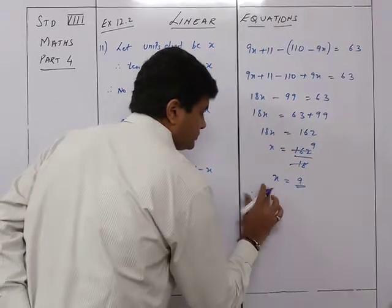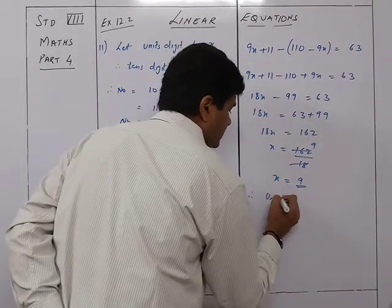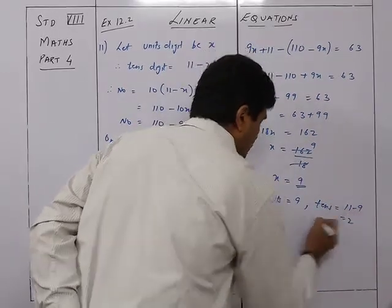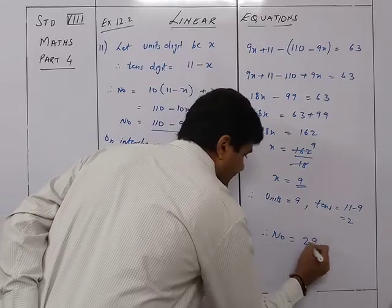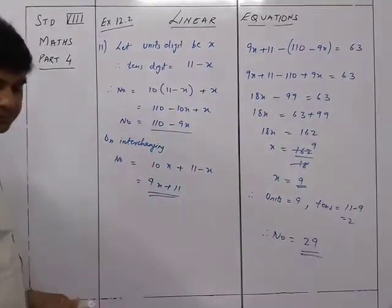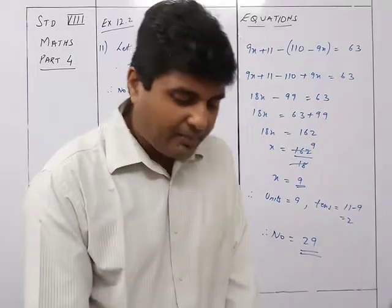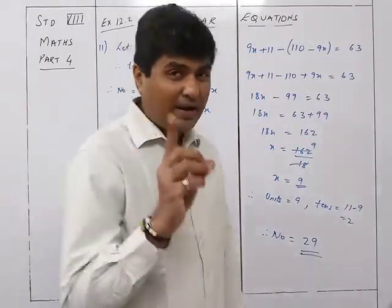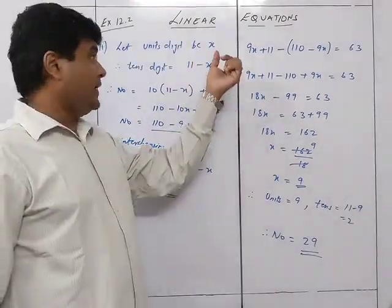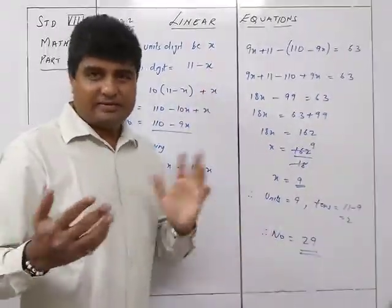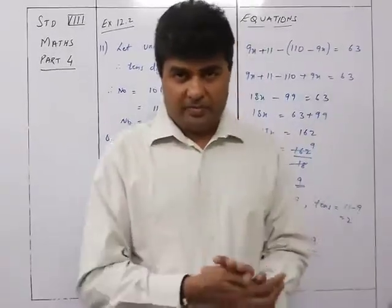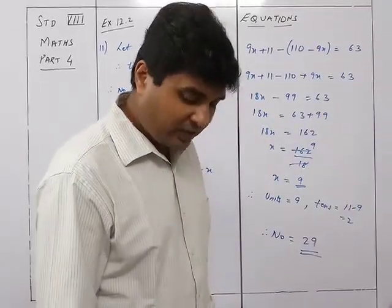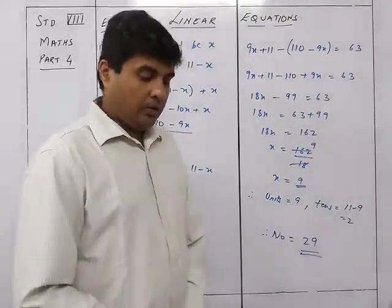So x = 162 divided by 18 = 9. Therefore units digit = 9 and tens digit = 11 minus 9 = 2. Therefore the number is 29. Since we defined x and 11 minus x clearly, there is only one answer here. That was sum number 11.